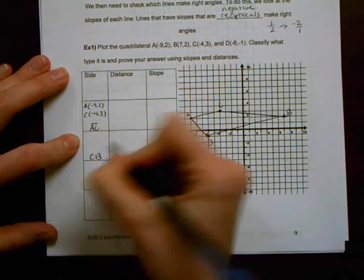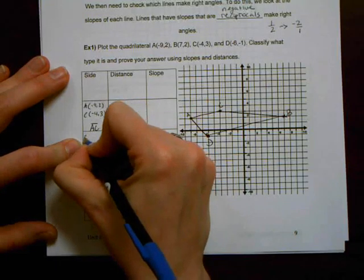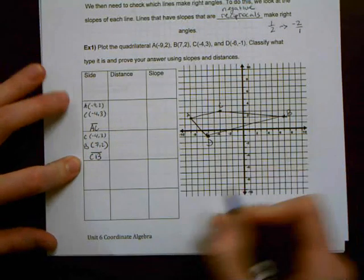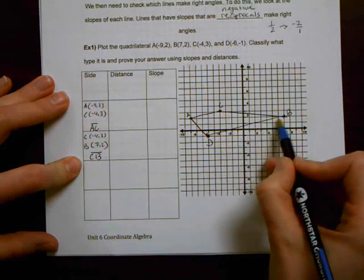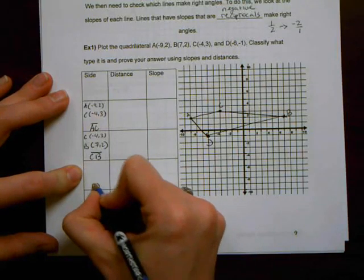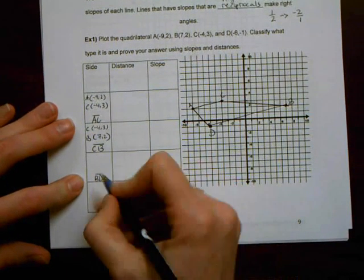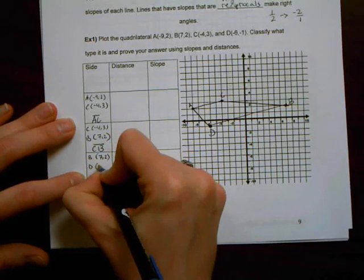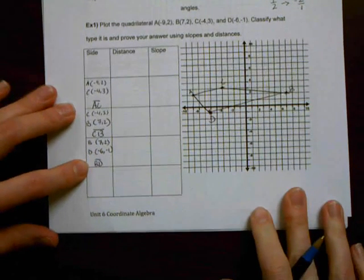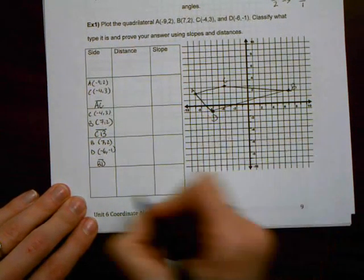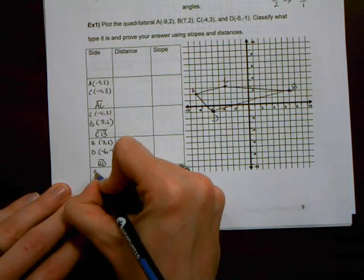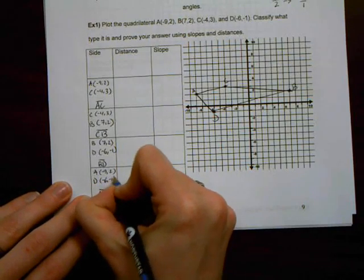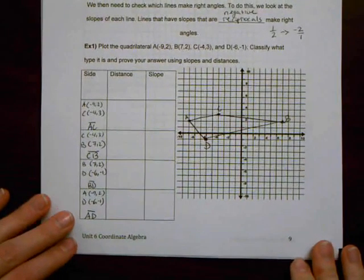Okay, then I'm going to go to this side, which is CB. And my point for C is negative four, three. My point for B is seven, two. Okay, and then I'm going DB or you can put BD. The order doesn't really matter as long as you've got the same two end points. And that is going to be seven, two, and D is negative six, negative one. Okay, and then the last line segment is AD. So line segment AD has the ordered pair negative nine, two, and then D is negative six, negative one.